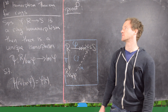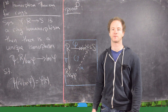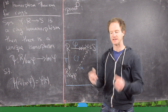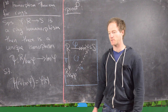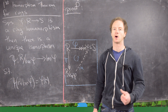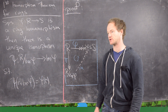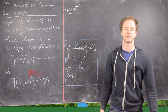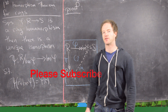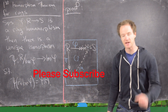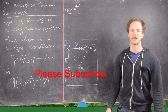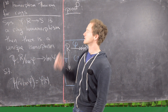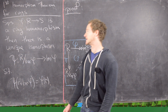Here we're going to look at the first isomorphism theorem for rings. There are these types of isomorphism theorems for all algebraic structures. We already looked at the first, second, and third isomorphism theorem for groups. Now we're going to do the same thing for rings. So let's look at the statement.